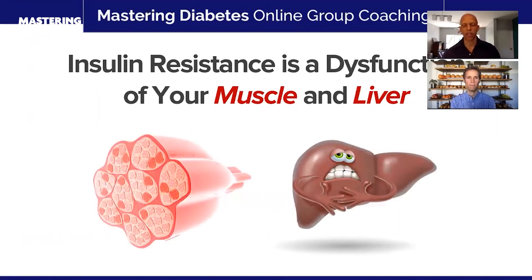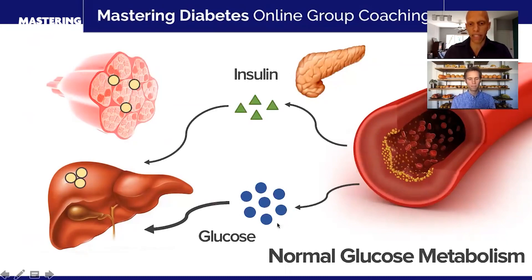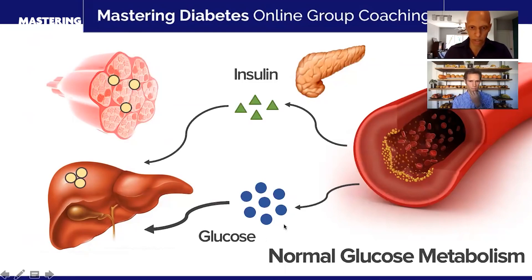Insulin resistance is a dysfunction of your muscle and your liver tissues. It's not primarily a dysfunction of your pancreas, although it can progress to be that way. Under normal circumstances, when you have normal glucose metabolism or non-diabetic healthy glucose metabolism, there's some amount of glucose shown here in blue that's floating in your blood. This glucose is mainly used by your brain 24 hours a day to think properly and to function properly, but it's also used by tissues all throughout your body — your heart, lungs, muscle, liver, pancreas, gallbladder — every tissue in your body uses glucose.